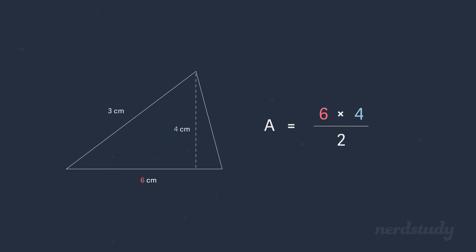So if we use our formula again and plug in our numbers, we would get 6 times 4 divided by 2, which equals 12 centimeters squared. Easy stuff.